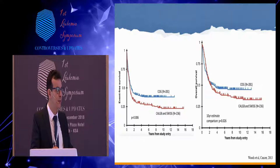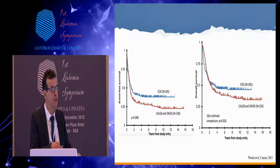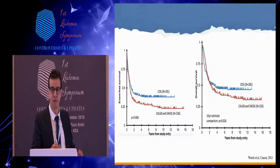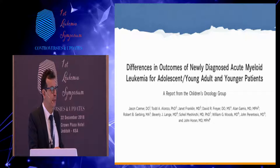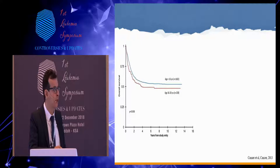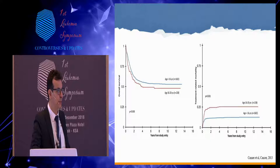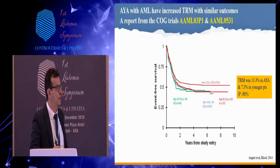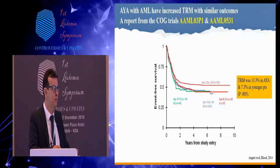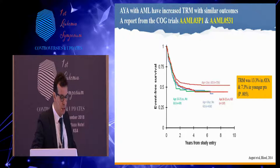A big caveat in this meta-analysis is that the age groups were significantly different — much younger patients were in the children's group. The COG also looked at their own studies using a unified protocol and examined the age factor. Younger kids under 16 did better compared to those aged 16 to 20. Treatment-related toxicity was higher for older patients aged 18 to 20. In the updated results of AAML0531 and AAML1031, the treatment-related mortality in AYA is up to 13.3%, compared to about half of that in younger patients.